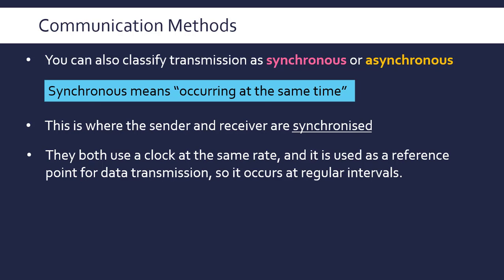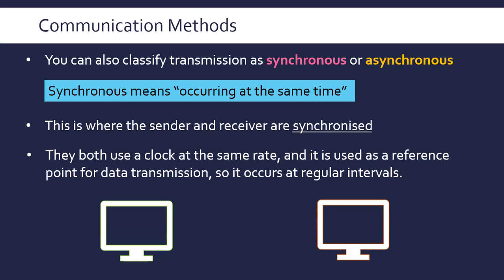To show this visually: if we have two devices, the sender and the receiver, they both have access to the same clock — or a replica of the same clock. A clock is just a device that produces a repeated signal, fluctuating between two different values, two different voltage levels, and it can regulate transmission because it occurs at regular intervals.